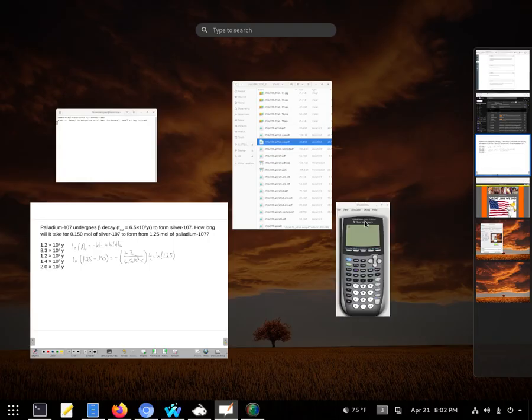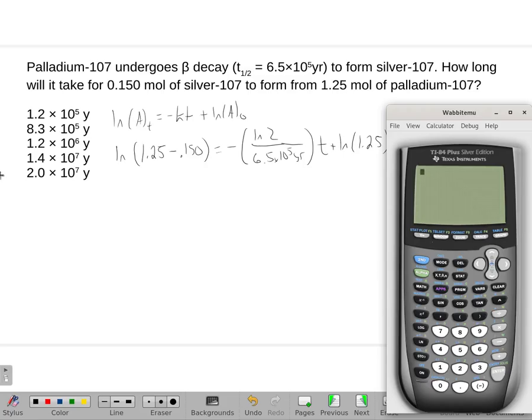Now we're just going to put this into our calculator. So I'm going to start with the 1.25 minus the 1.15 and get the natural log of that, and subtract from that the natural log of the 1.25.